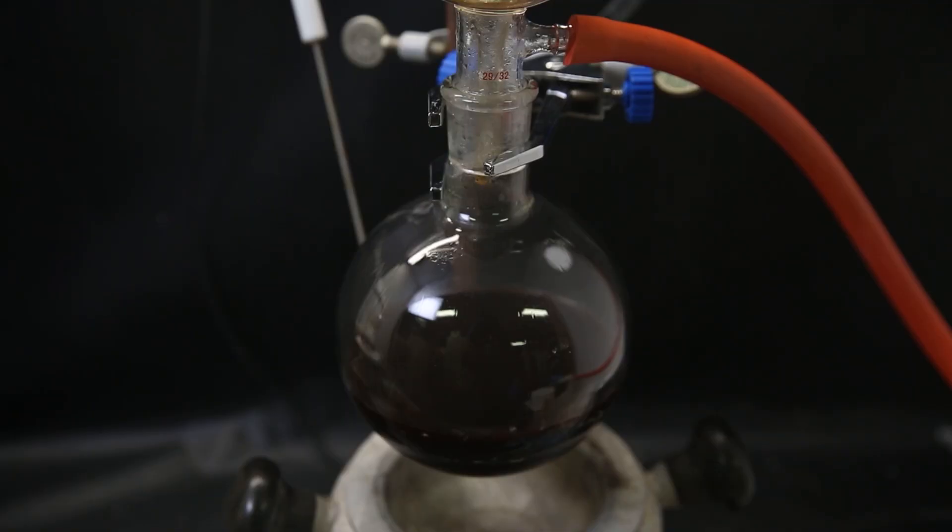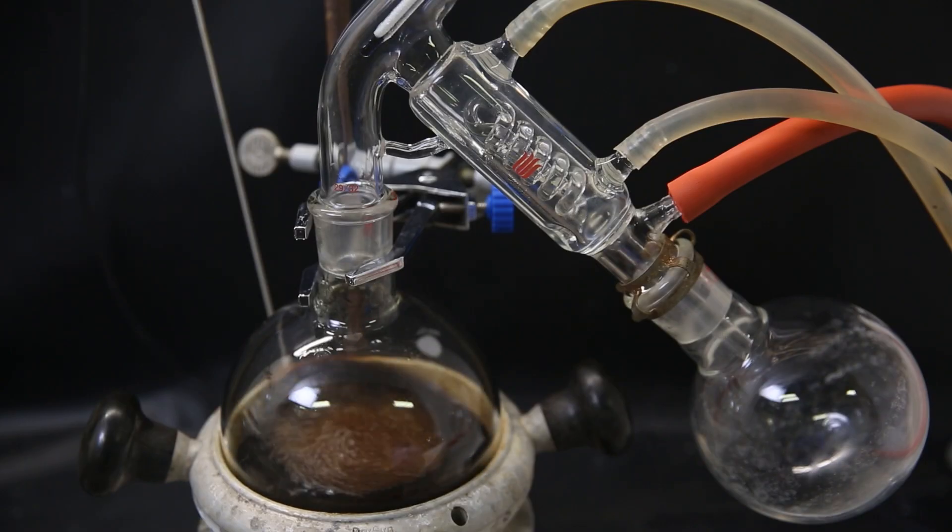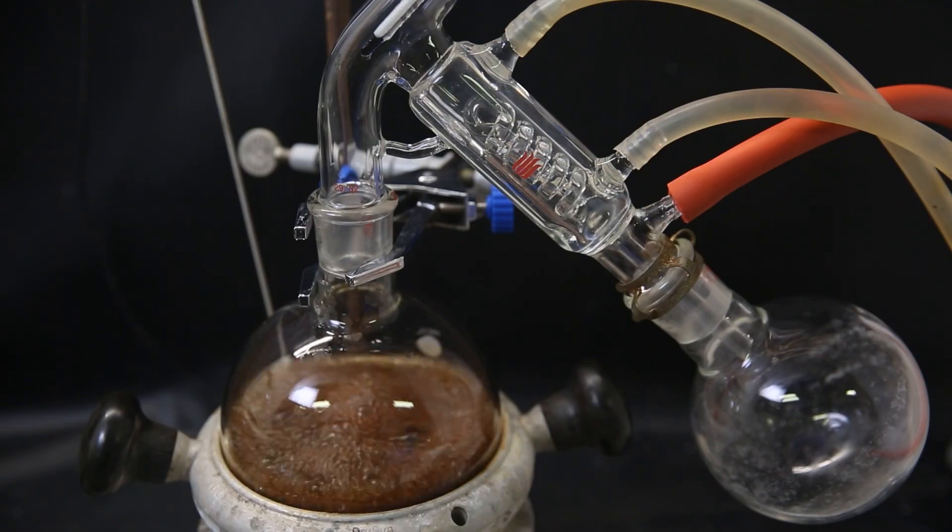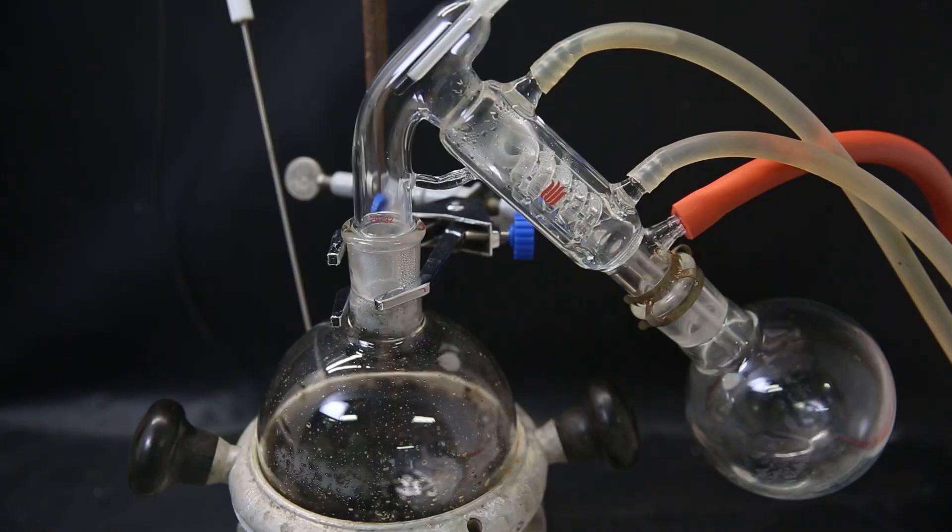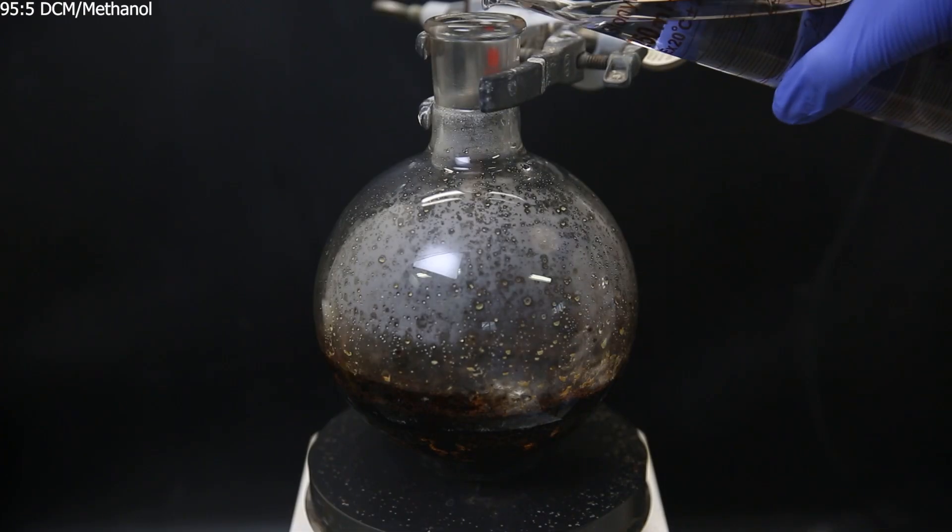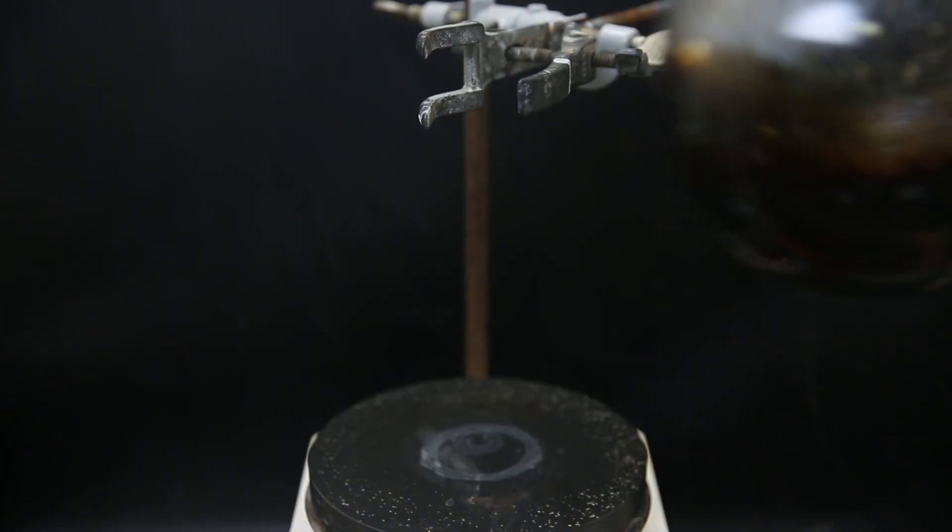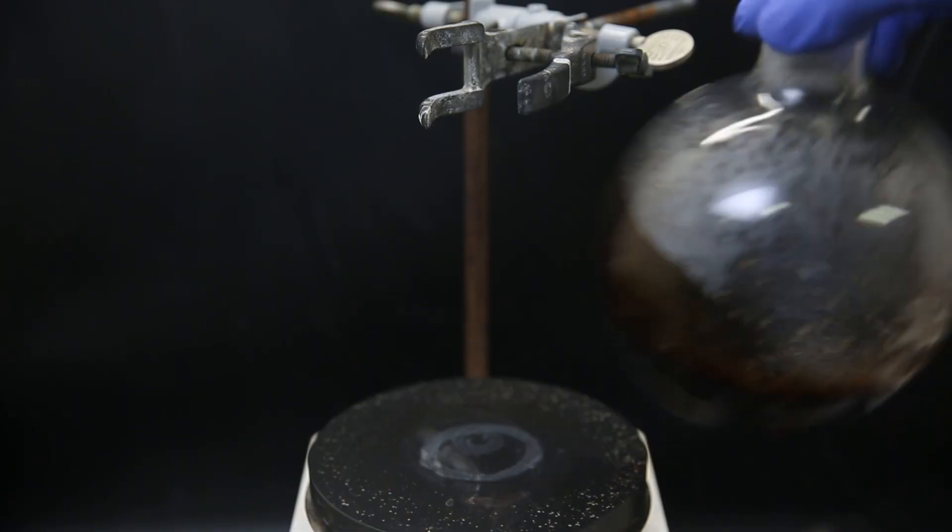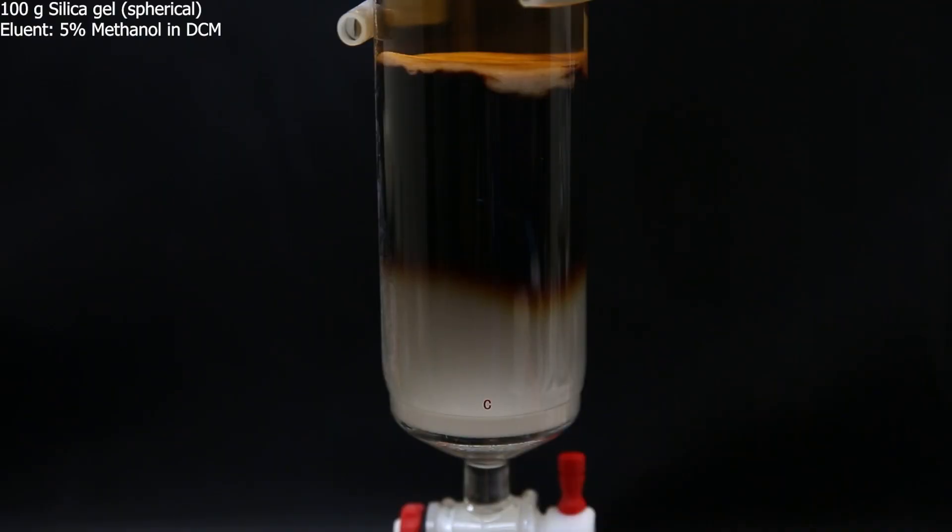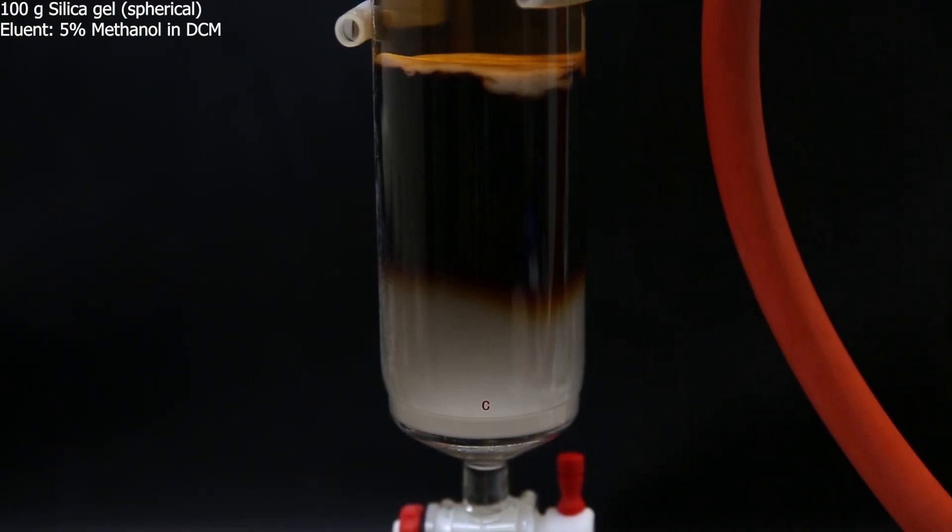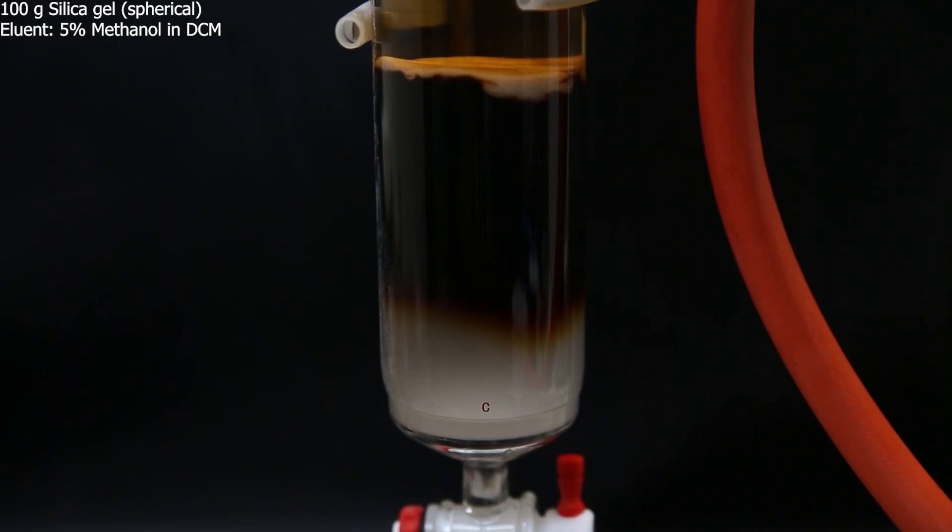The filtrate is still black, and I set it up for short path vacuum distillation to remove all of the methanol. A black solid is left behind, and I add some 95 to 5 DCM methanol mixture to dissolve the product. Not everything dissolves and it seems to contain some salts that do not dissolve. Then like in the last video, I set it up for a quick column which will separate the components based on their polarity.